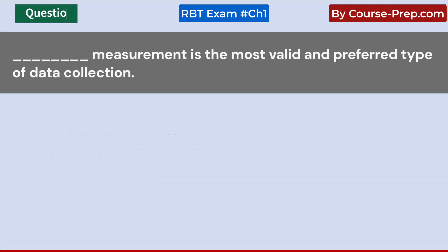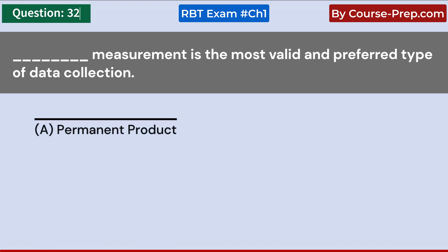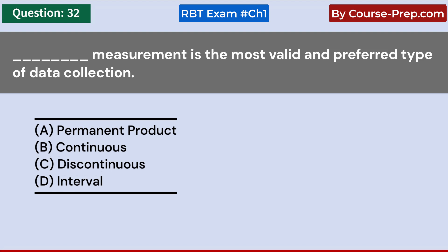Which measurement is the most valid and preferred type of data collection? A. Permanent product. B. Continuous. C. Discontinuous. D. Interval. Answer B: Continuous.